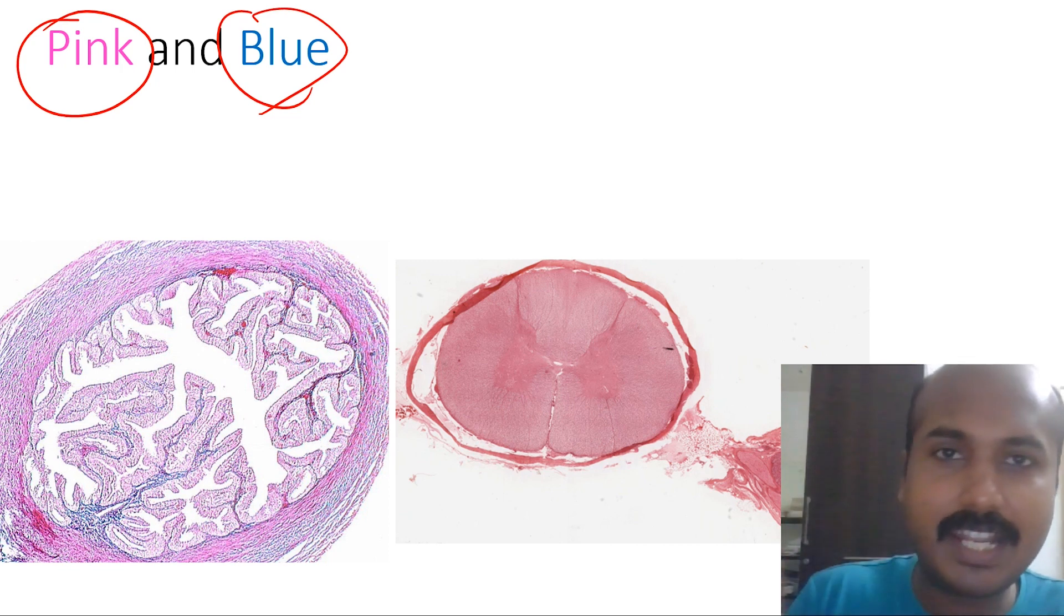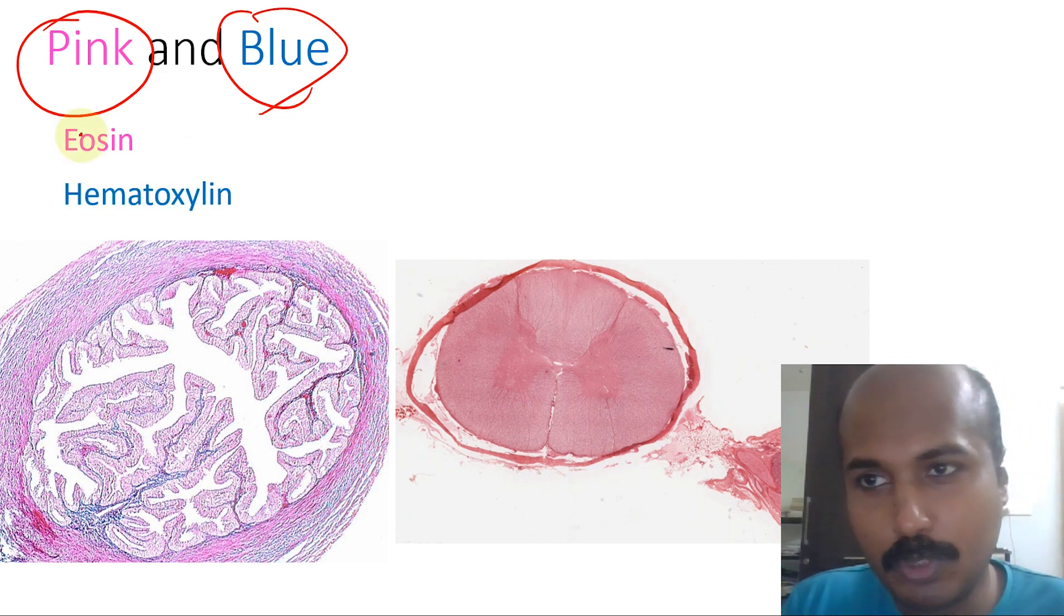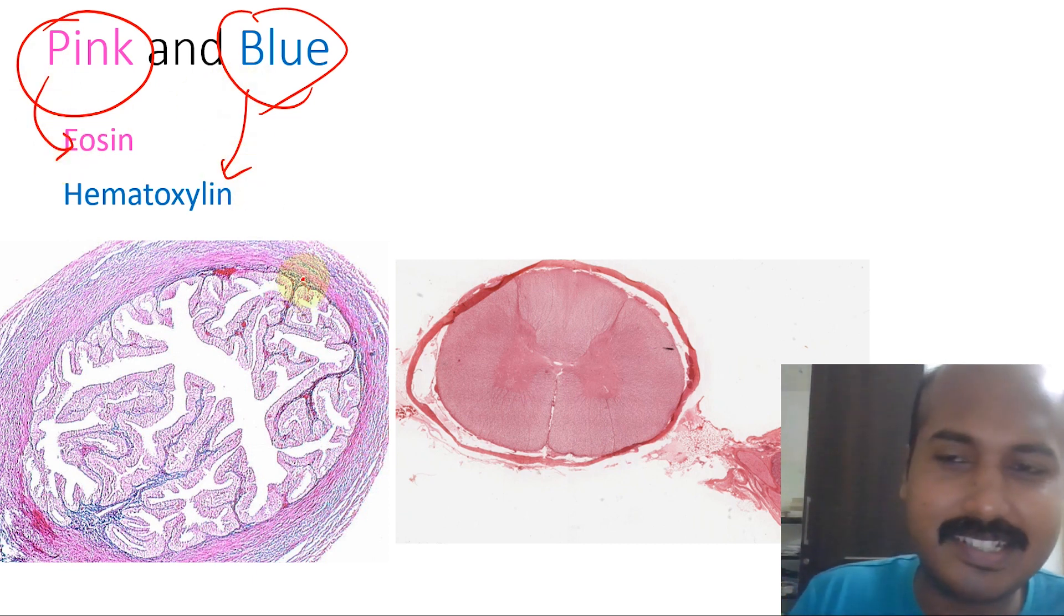Histopathology becomes very fun to learn if you understand histology. The two colors you learned here as pink and blue: pink will be called by the name eosin, and the blue will be known by the name hematoxylin. Now what are these two esoteric names?